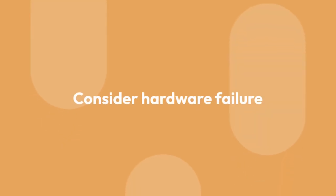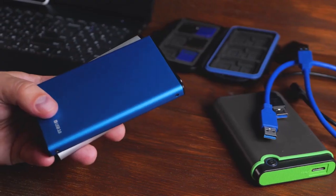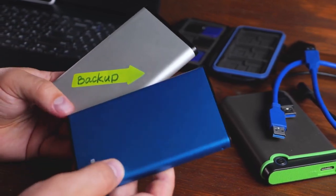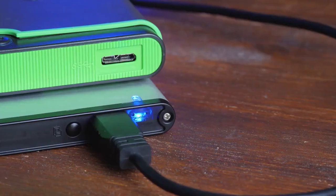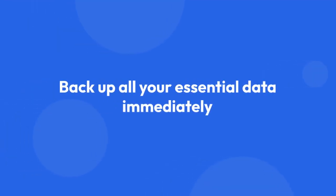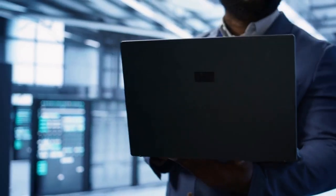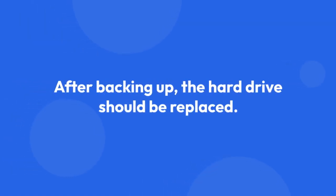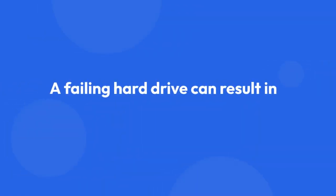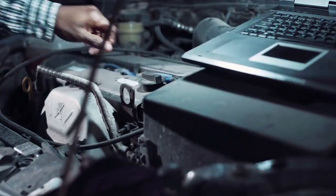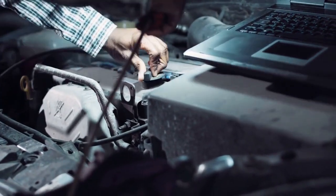6. Consider hardware failure. If none of the previous steps resolve the issue, it's highly likely your hard drive is failing. The short DST check failure is often a warning sign. Back up all your essential data immediately using an external drive or cloud storage. After backing up, the hard drive should be replaced. A failing hard drive can result in complete data loss. Data recovery is possible, but expensive.